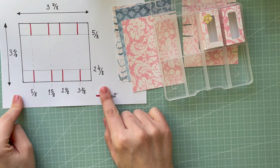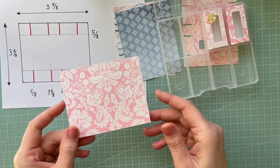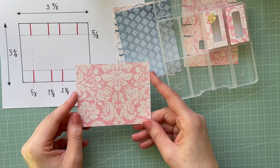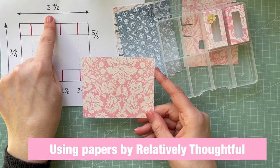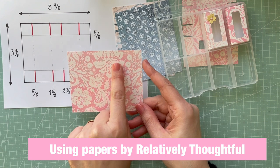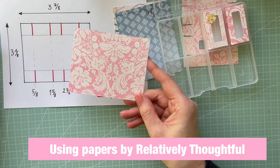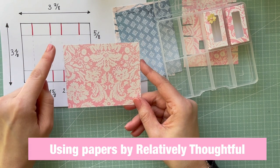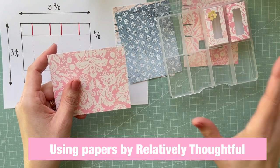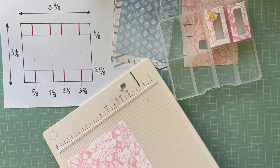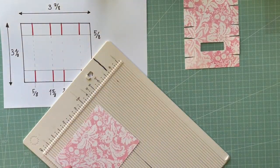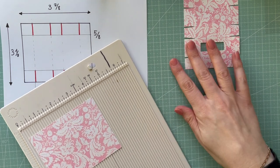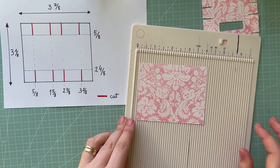I wrote all the measurements. So you need a card or paper, patterned paper, measuring 3 inches and 7/8 by 3 inches and 1/8. So now you need a scoreboard.